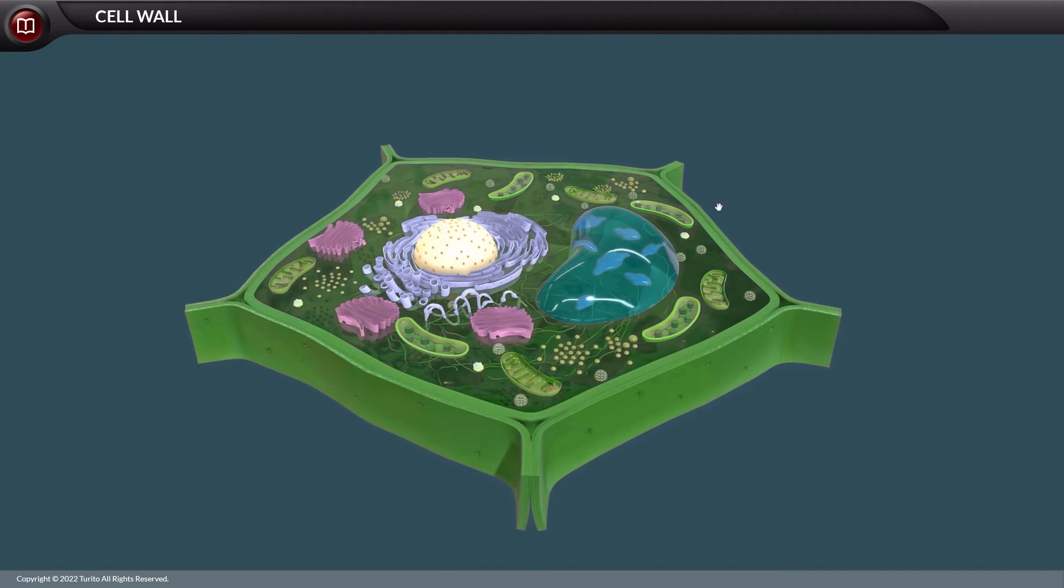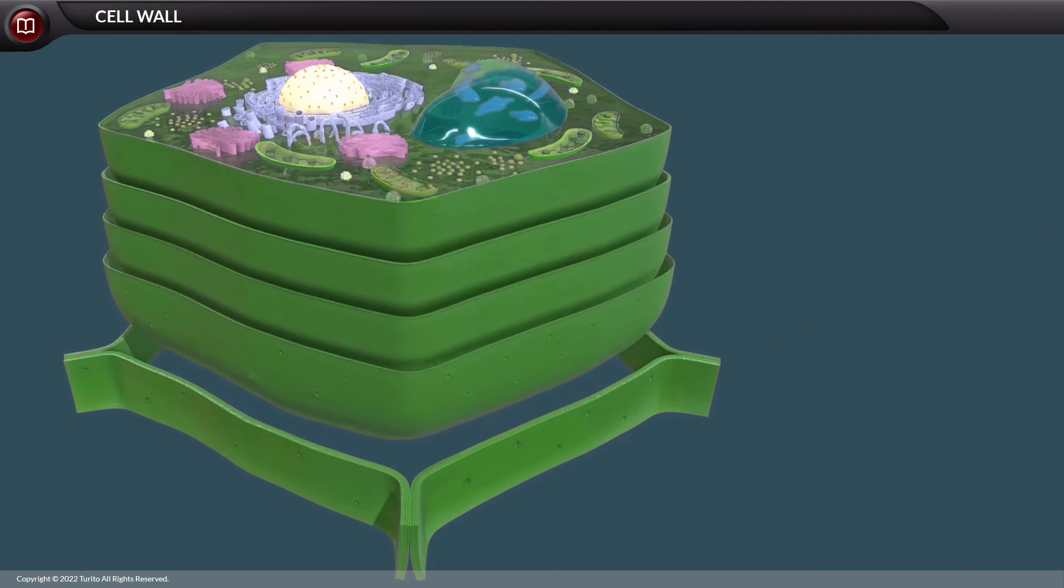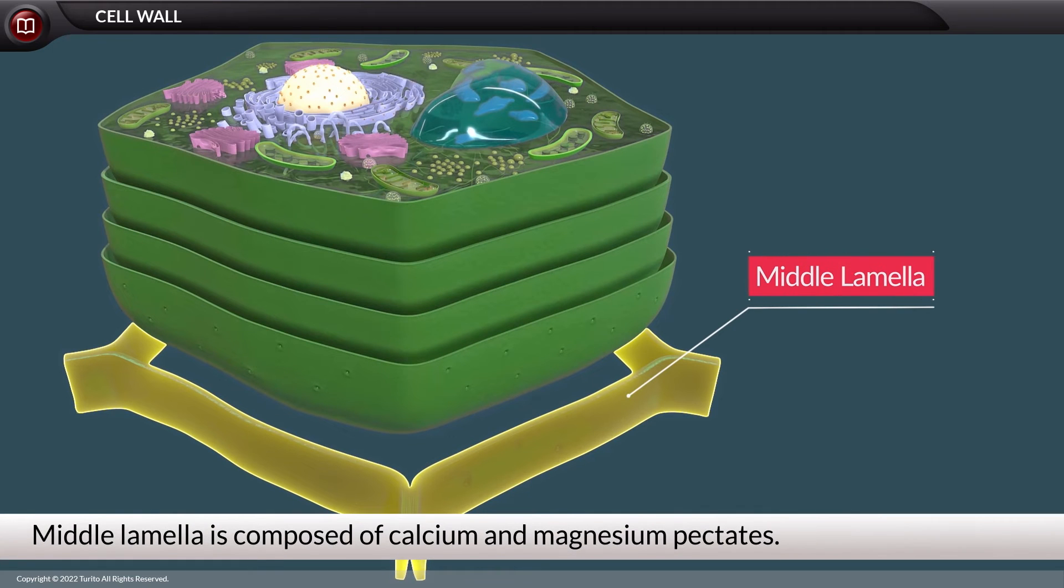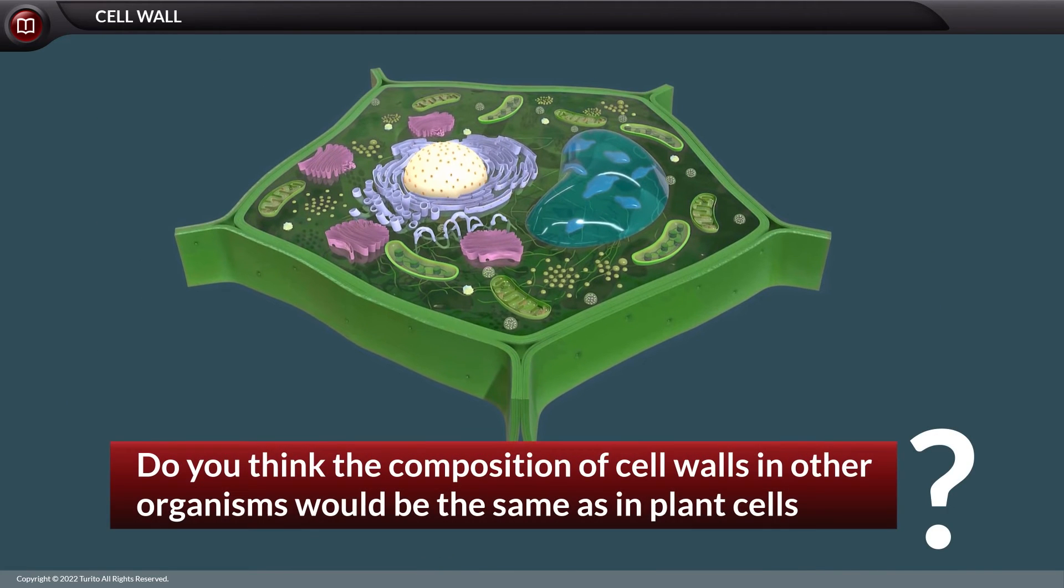In addition to different cell walls, the primary cell walls of adjacent cells are cemented by a special layer, called middle lamella, composed of calcium and magnesium pectates. Do you think the composition of cell walls in other organisms would be the same as in plant cells?